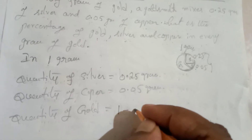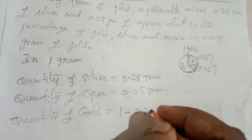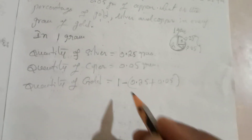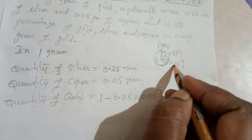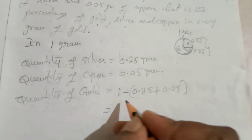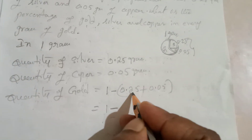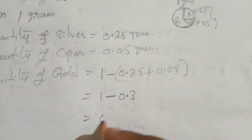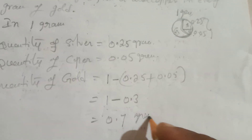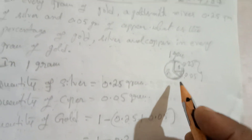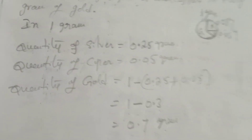1 minus (0.25 plus 0.05): 0.25 plus 0.05 is 0.30, and 1 minus 0.30 is 0.70. So gold is 0.7 grams, copper is 0.05, and silver is 0.25.